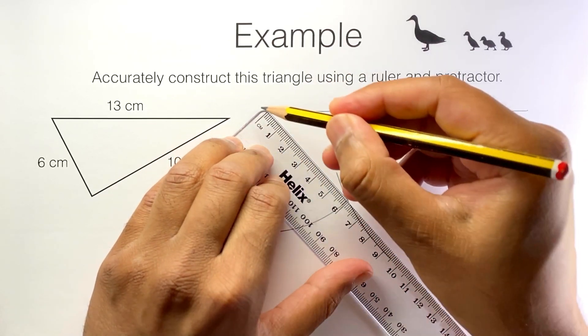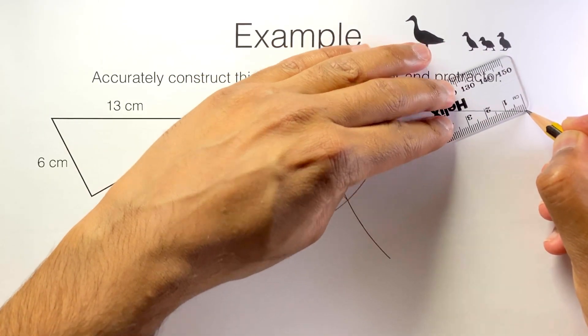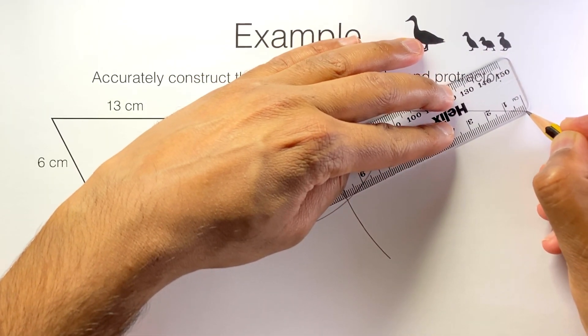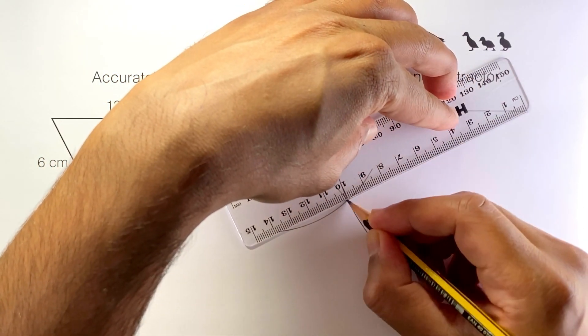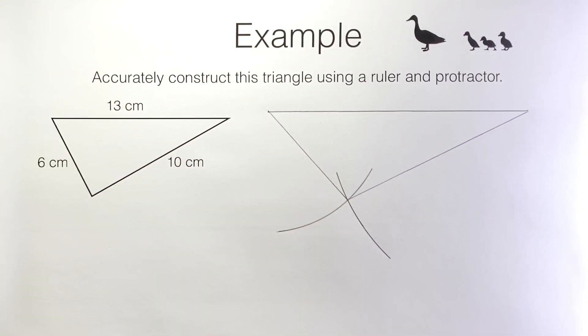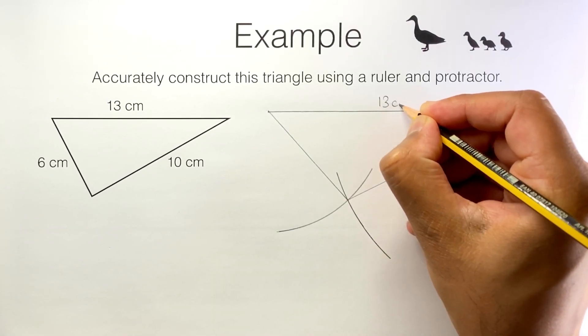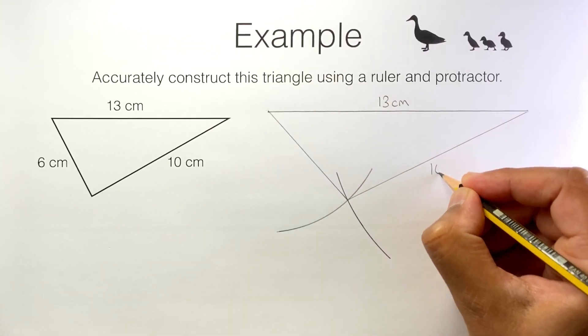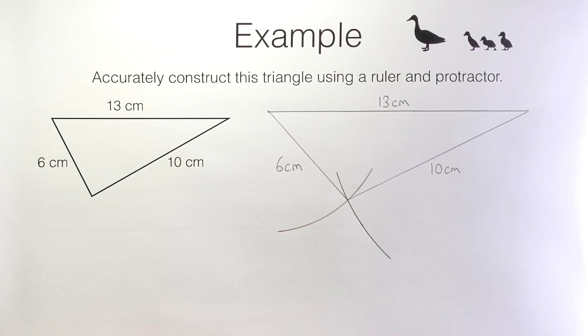Notice that this is six centimeters long. And notice that this is 10 centimeters long. And there we have our accurately constructed triangle. Let's just label the lengths. There's 13 centimeters. There's 10 centimeters. There's six centimeters. And we're done.